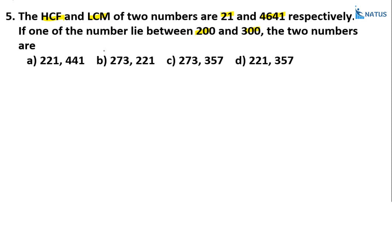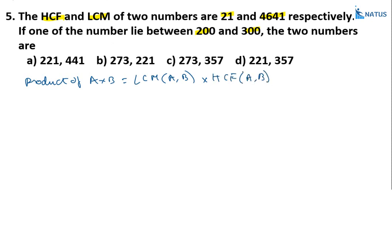We know that the product of two numbers equals the product of their LCM and HCF. So A × B = LCM × HCF = 4641 × 21. With HCF = 21 and LCM = 4641, A × B = 21 × 4641.